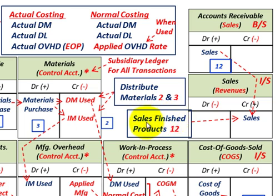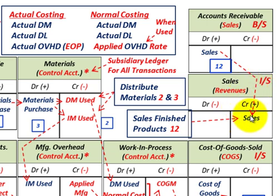The final step, step twelve, looks at sales of the finished product. We debit accounts receivable on our balance sheet for the sales made, and the credit goes to our sales or revenues account on the income statement. That completes all twelve steps of the job order costing accounting cycle.